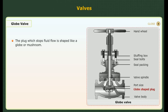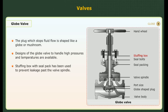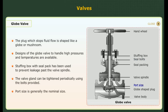Globe valve. The plug which stops fluid flow is shaped like a globe or a mushroom. Designs of the globe valve to handle high pressures and temperatures are available. A stuffing box with seal pack has been used to prevent leakage past the valve spindle. The valve gland can be tightened periodically using the bolts provided. Port size is generally nominal size. Port fitting could be either flanged as shown, or screwed fitting where the body is with threads.